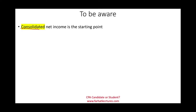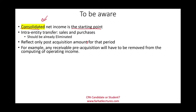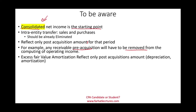Consolidated net income is the starting point. Intercompany transfers — sales, purchases, receivable, payable — anything related to intercompany is already eliminated because we're dealing with the consolidated financial statements. We are only reflecting post-acquisition amounts for that period. Any receivable, inventory, prepaid, accounts payable from pre-acquisition will have to be removed from the computation of operating income. Excess fair value amortization also only reflects post-acquisition amounts.